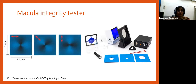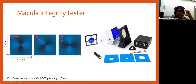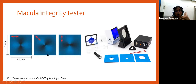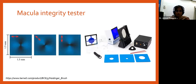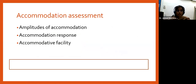The Macular Integrity Tester (MIT) is a modification of the conventional Haidinger's brushes — an entoptic phenomenon-based test. When looking through blue filters, the patient sees a propeller shape. The propeller center corresponds to the fovea, and its position relative to the fixation point indicates eccentric fixation. We use this not just for estimation of eccentric fixation but also in treatment — to break anomalous correspondence and eccentric fixation patterns.